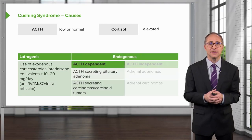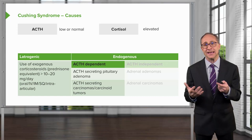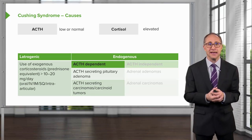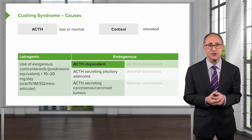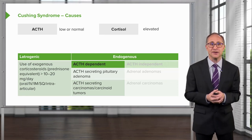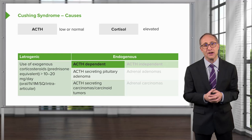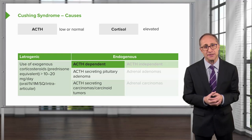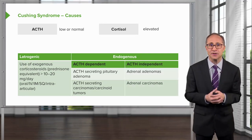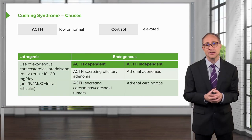Endogenous causes include ACTH-dependent and ACTH-independent. ACTH-dependent Cushing syndrome is caused by ACTH-secreting pituitary adenomas or ACTH-secreting carcinomas. ACTH-independent causes include adrenal adenomas and adrenal carcinomas.